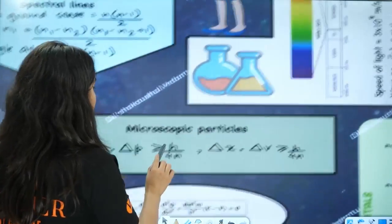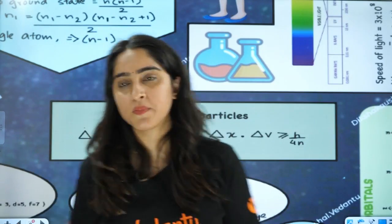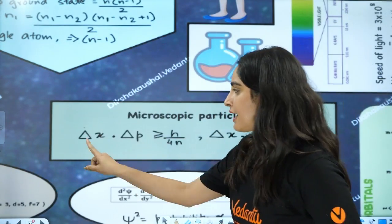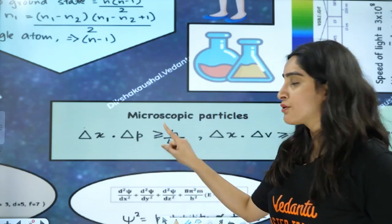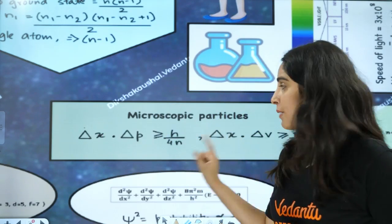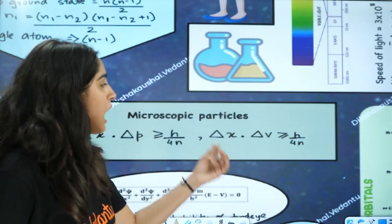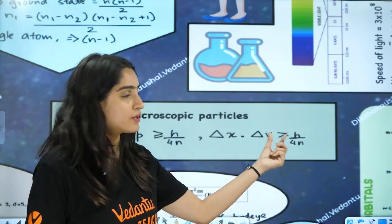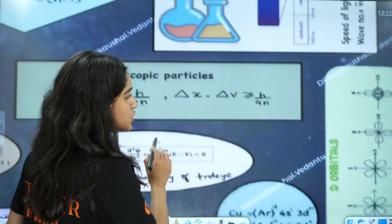Next, for microscopic particles, we have the Heisenberg uncertainty principle, where Δx (uncertainty in position) multiplied by uncertainty in momentum is greater than or equal to h by 4π. Equivalently, uncertainty in position multiplied by uncertainty in velocity is greater than or equal to h by 4πm.